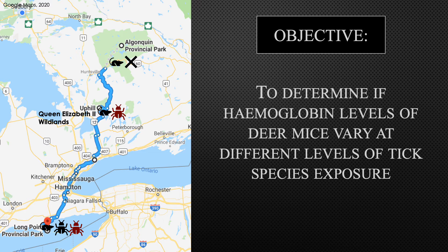To better understand this parasite-host relationship, I measured the hemoglobin levels of the mice. Since ticks require blood meals from their hosts, they are directly affecting the hematology of the hosts, so I wanted to determine if hemoglobin levels of deer mice vary at different levels of tick exposure. I hope to gain a better insight into the differences between experienced and ecologically naïve hosts that may encounter these parasites, which may alter the host's quality of life.